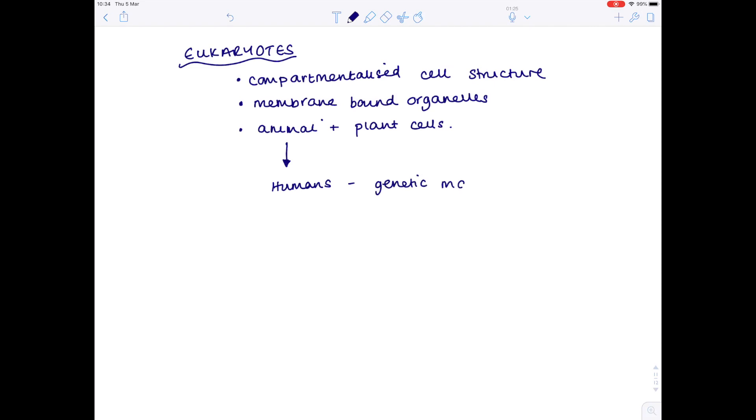First of all, notice that with eukaryotes, these show a compartmentalised cell structure. They contain membrane-bound organelles, and we're looking at things like animal and plant cells. If we zoom in on animal cells, looking at us for example, our genetic material is found within the nucleus of our cells, and this genetic material is found in structures called chromosomes, of which we have 23 pairs of chromosomes in normal somatic body cells.